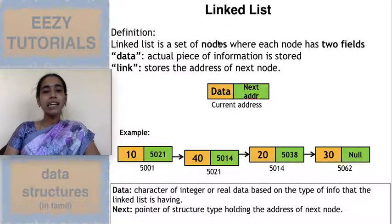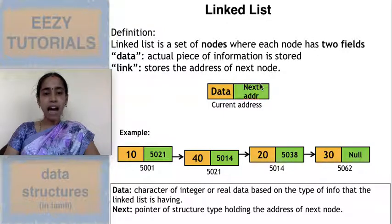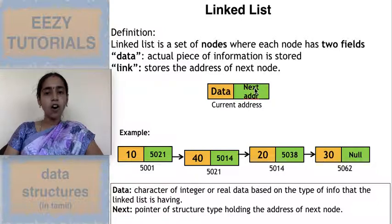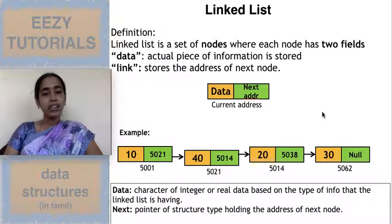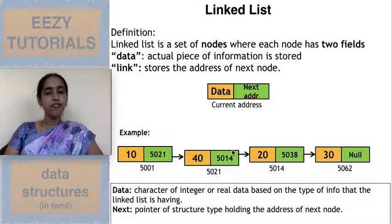So what is a linked list? A linked list is a set of nodes. In this set of nodes you will have two fields: the first field is data and the second field is the address of the next node. So a node is a combination of data as well as a link or next field which holds the address of the next node. Let us see an example. My actual data are 10, 40, 20, and 30.